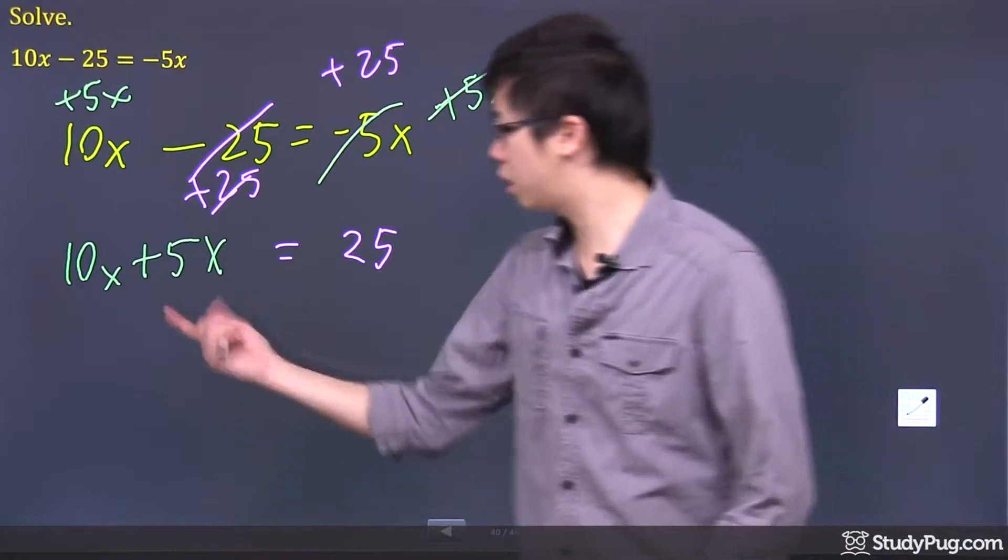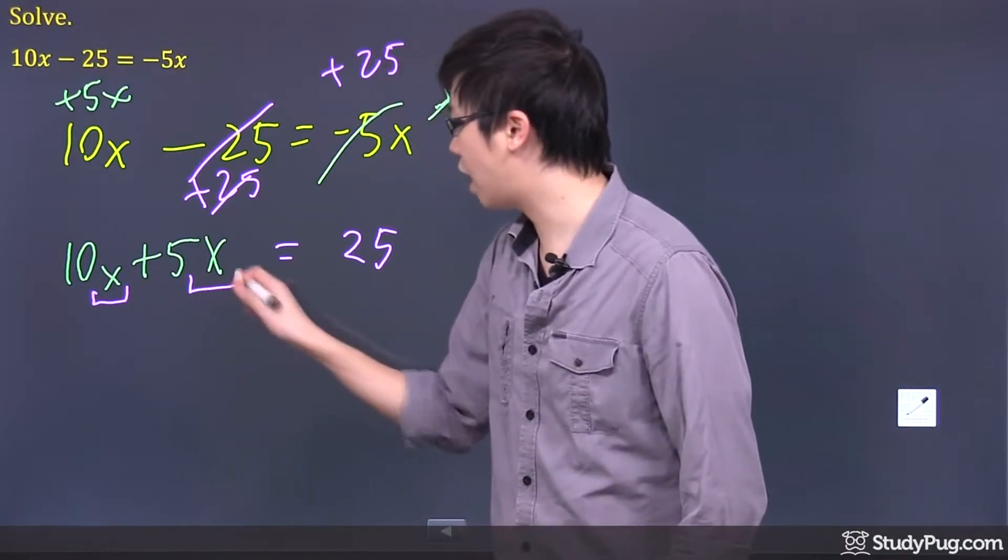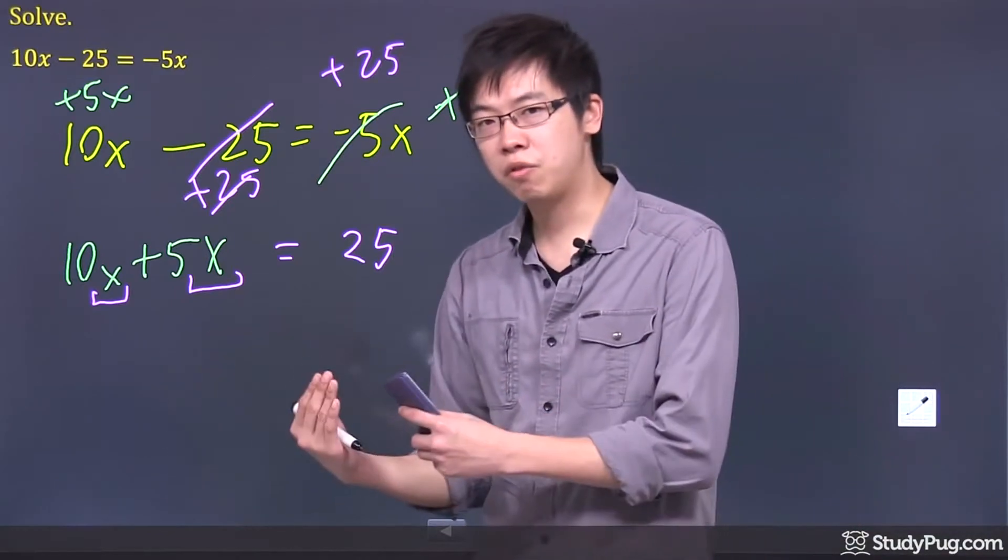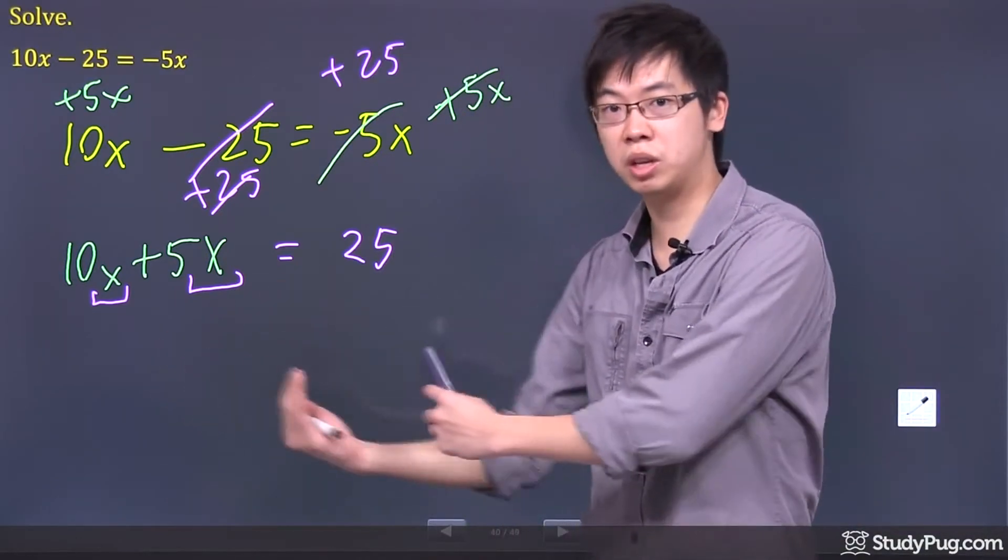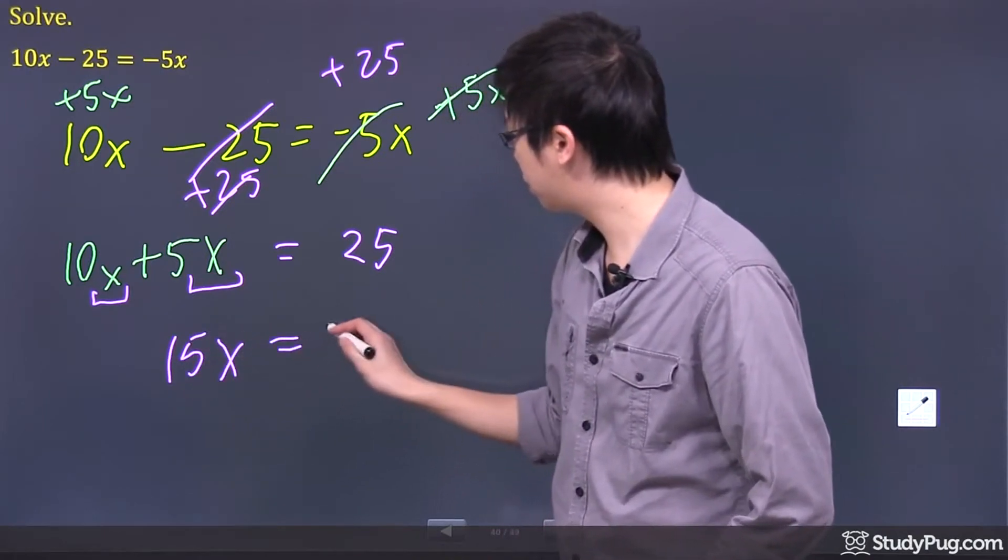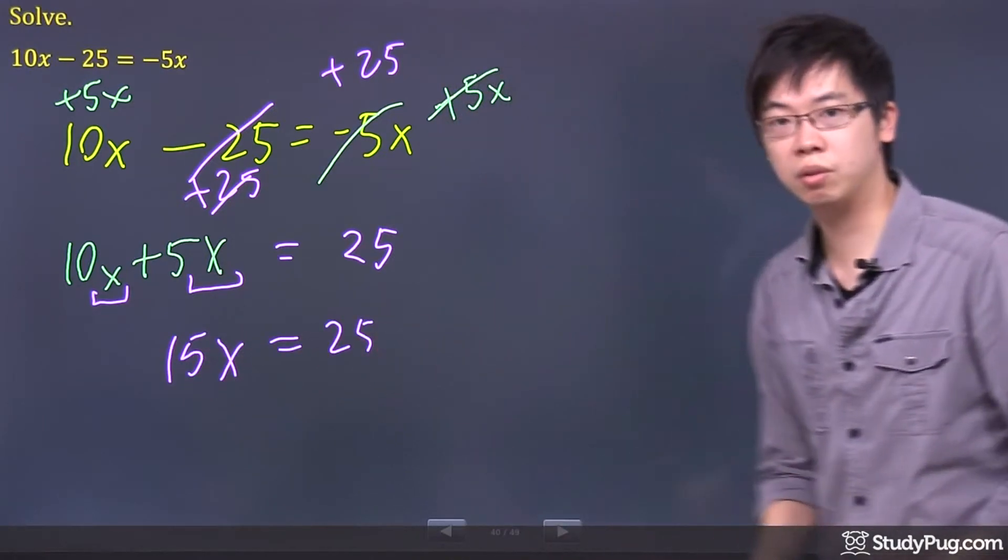To go to the next step, we're going to collect the like terms, because these guys are the x and x, same type of variables. We can add the coefficients, which is the number in the front, together. What's 10 plus 5? We've got 15x equals 25.